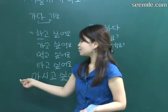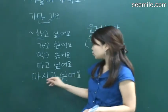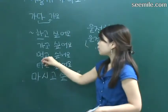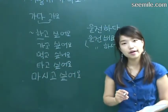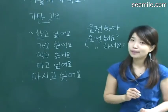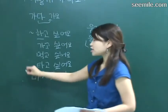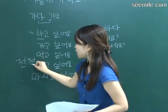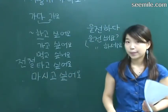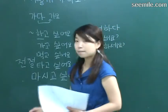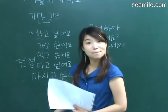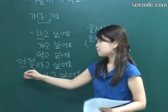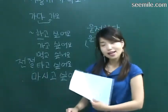음료수 마시고 싶어요 — we can put any drink there. 마시고 싶다, 마시고 싶어요. So 타고 싶어요: 버스 타고 싶어요? 아니요, 저는 전철 타고 싶어요. 전철 means subway. 전철 타고 싶어요. 버스 타고 싶어요. Taxi, 전철, bus — usually we take those things.